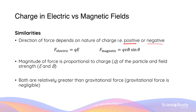In the electric field, if you have a positive charge, the force will always be directed towards the negatively charged plate. Conversely, if the charge is negative, then the force will be directed towards the positive plate. As for the magnetic force, we can determine the direction of the force using our right-hand palm rule.